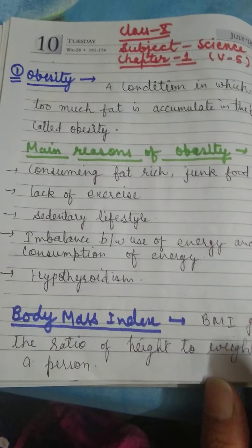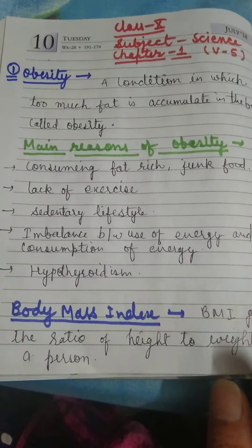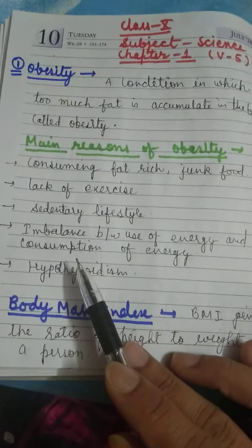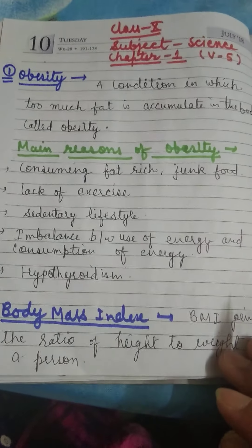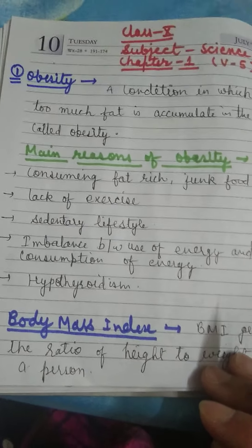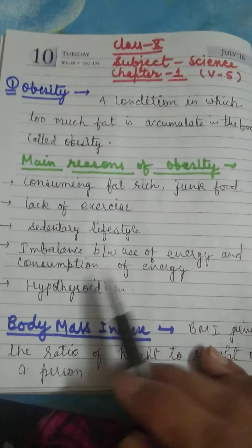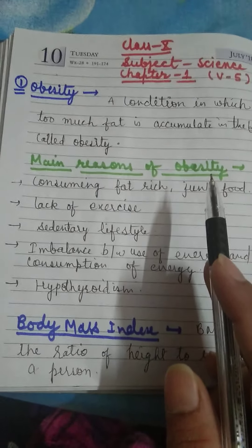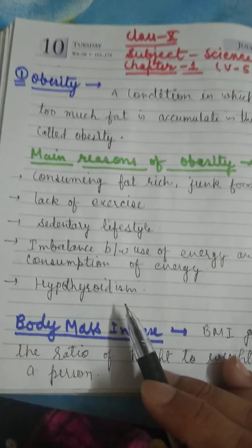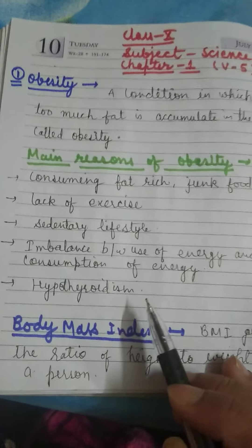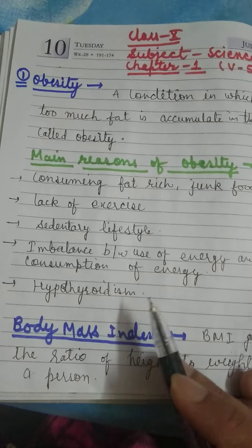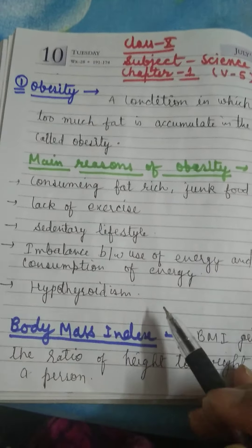The third reason is a sedentary lifestyle. The next is an imbalance between the use of energy and consumption of energy — we consume more energy but use less. The next cause is hypothyroidism, which means the secretion of thyroid hormone is reduced. These are all the reasons for obesity.